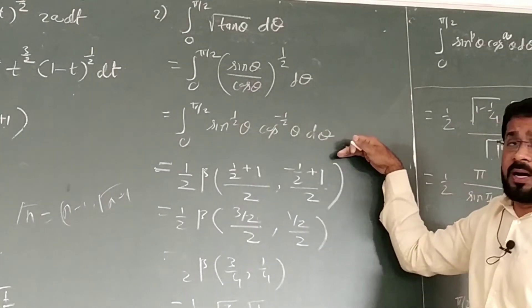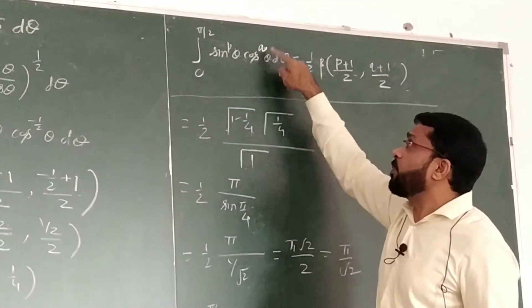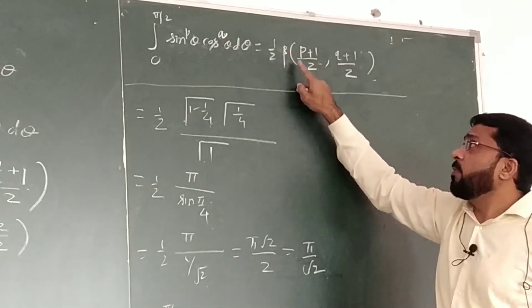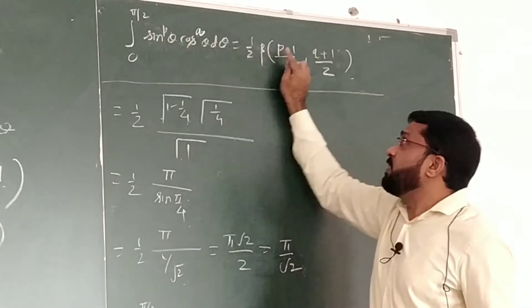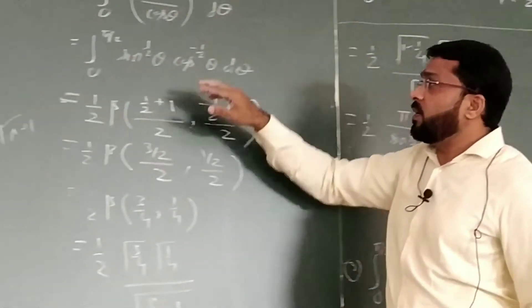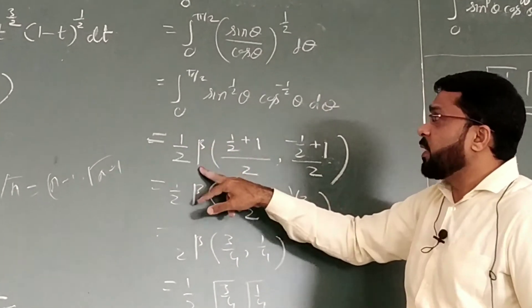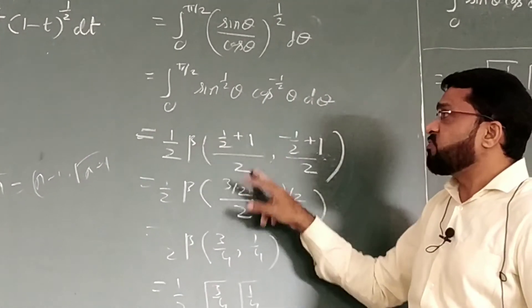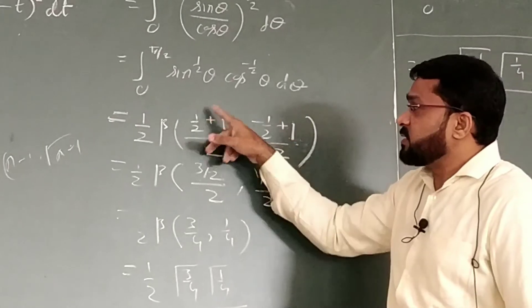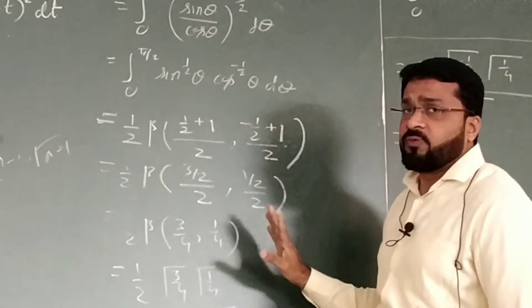Now, apply the formula. The formula is: 0 to π/2 limits, sin to the power p θ, cos to the power q θ dθ, that will be 1/2 beta of p plus 1/2 and q plus 1/2. So here power of sin is 1/2, power of cos is minus 1/2. Simplify this, this is 3/2, simplify this is 1/2, this is nothing but 3/4, this is nothing but 1/4.